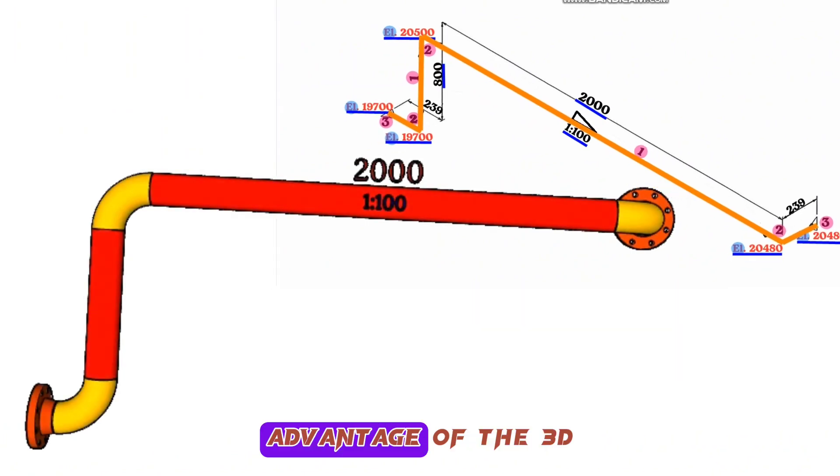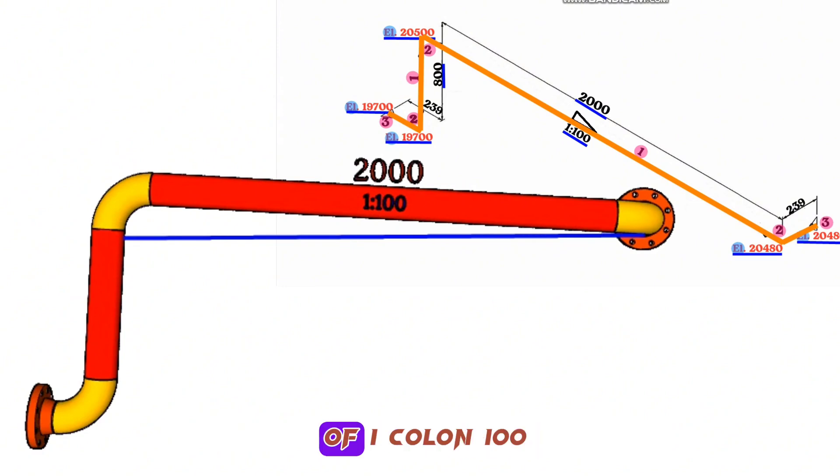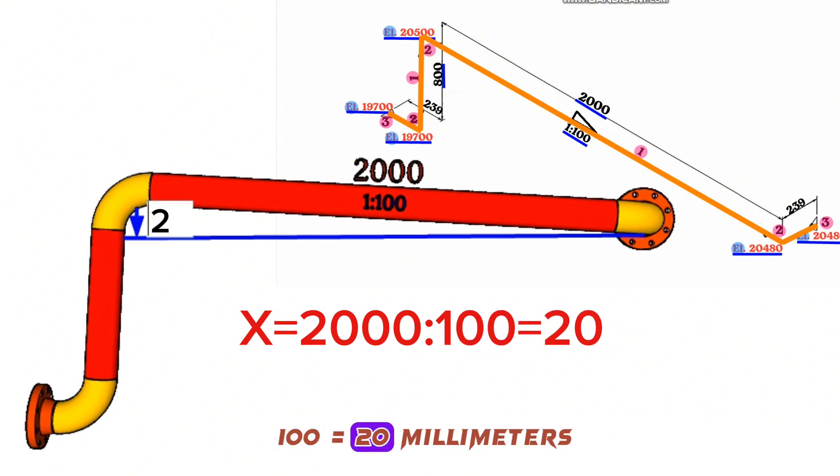I also took advantage of the 3D model view of the pipeline to fully understand the meaning of the slope. At a distance of 2,000 millimeters, pipeline elevation will decrease by 20 millimeters at a slope rate of 1:100. X equals 2,000 divided by 100 equals 20 millimeters.